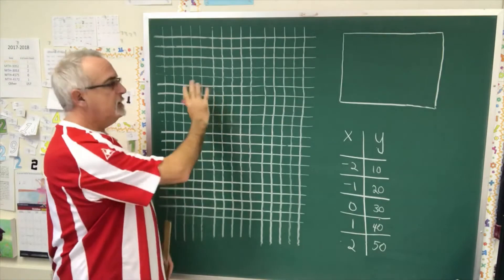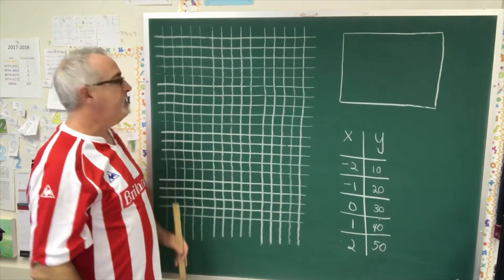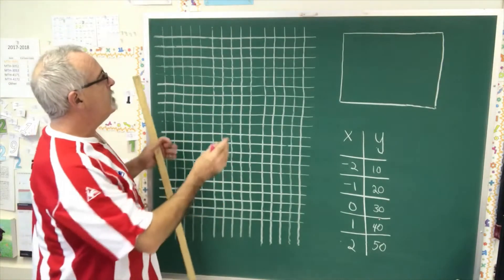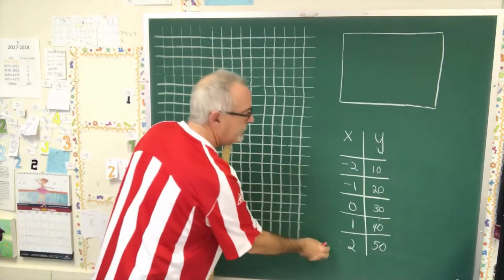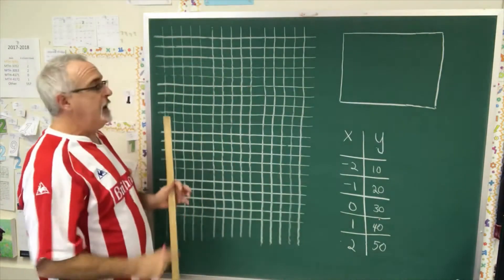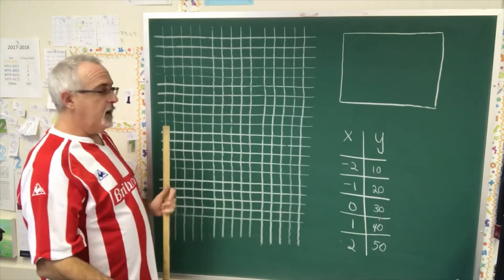So on this somewhat crooked looking graph paper, I'm going to put axes so that I can make a graph from this table of values. I need an x-axis and a y-axis.